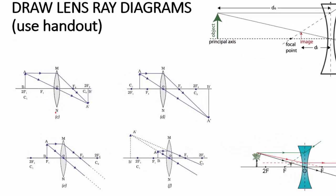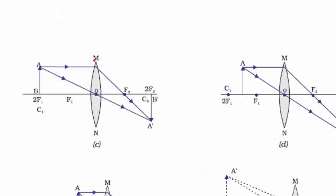Let's have a look at this diagram. We've got a biconvex lens here — remember, this is a lens, not a mirror. Over here at position A is where the object is, shown as an arrow. We need to draw a lens ray diagram with at least two rays that intersect each other in order to find where the image is going to be.